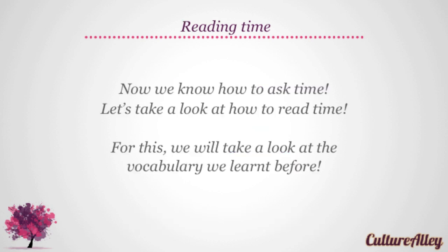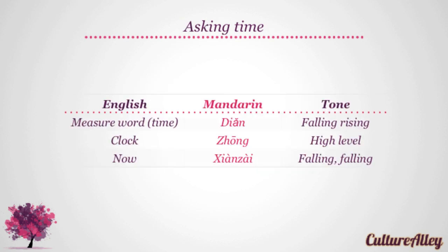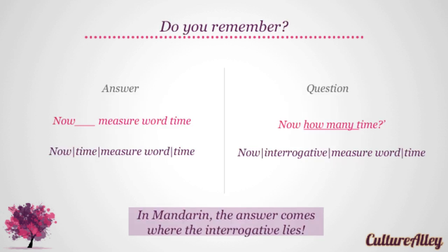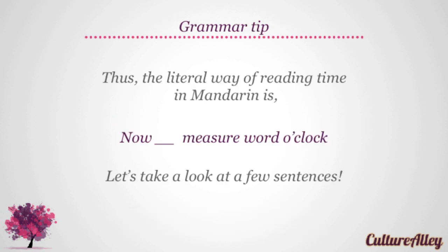Now that we know how to ask time, let's take a look at how to read time. The measure word for time is dien, while clock becomes zhōng, and now becomes xiàn zài. Since the structure for the question is 'now how many time', and in Mandarin the answer comes where the interrogative lies, our answer simply replaces the interrogative and becomes 'now dash measure word time'. Thus, the literal way of reading time in Mandarin is: now, dash, measure word, o'clock.